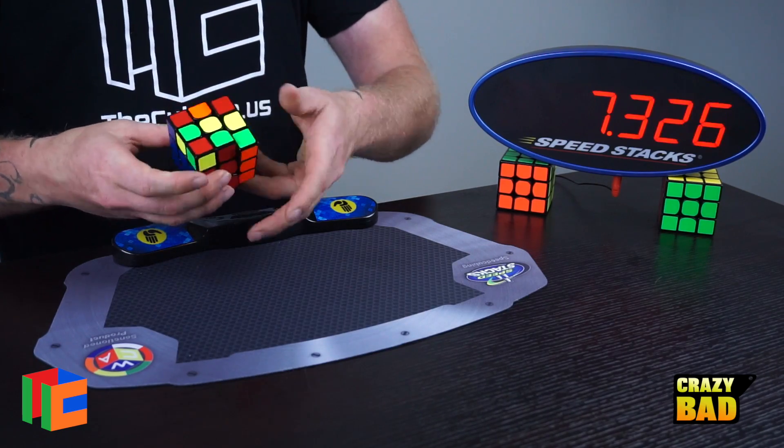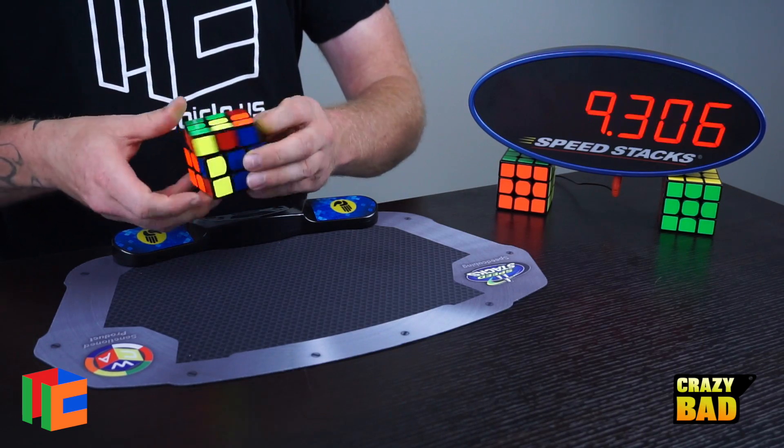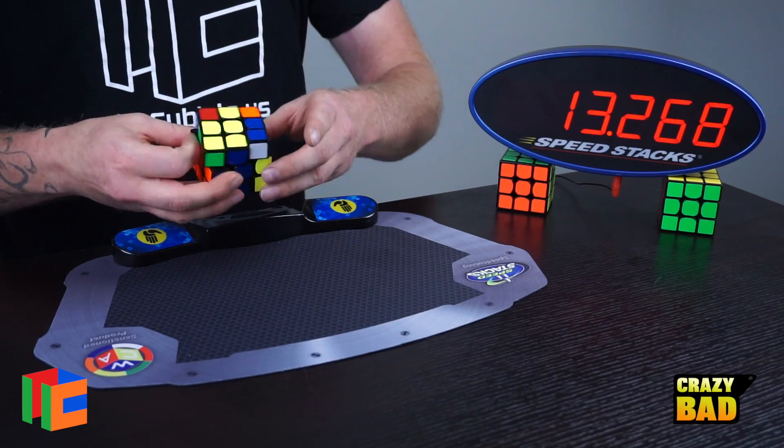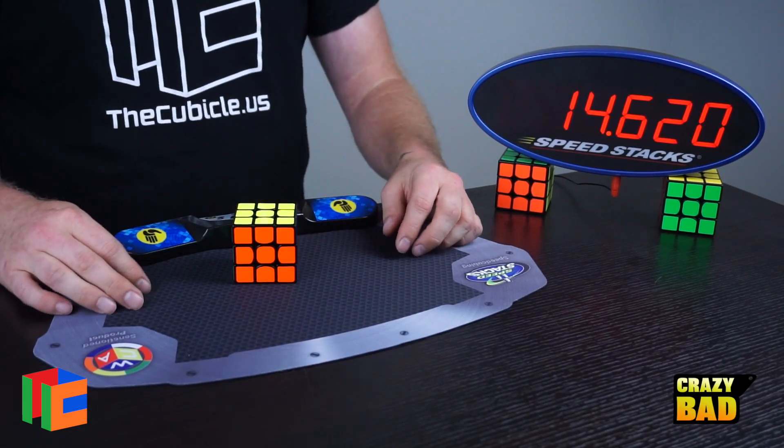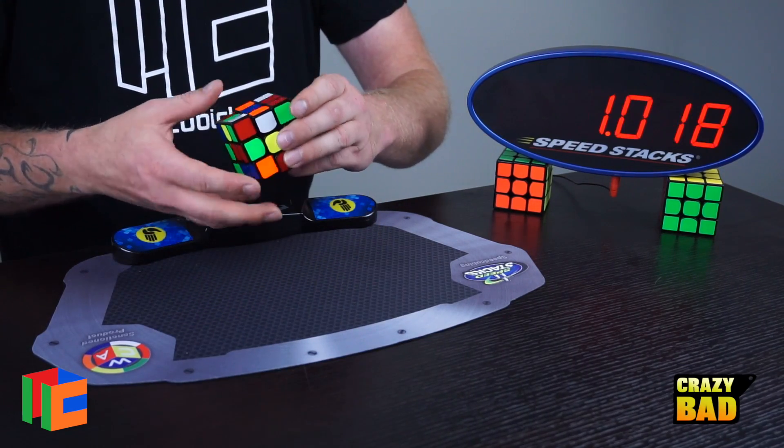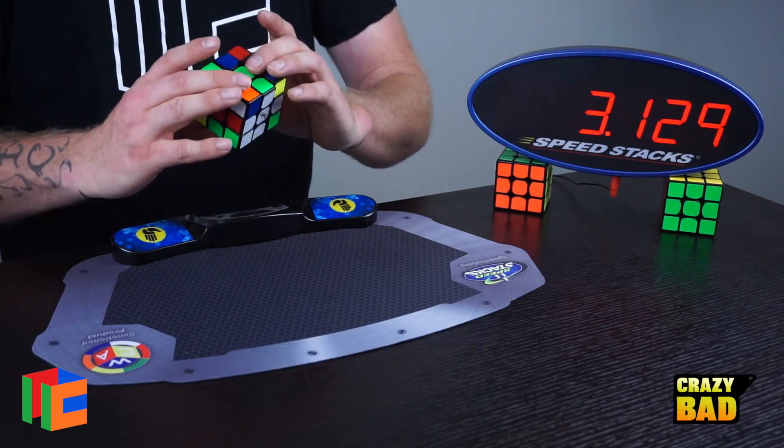And Kevin Hayes did a bit of a review on this as well. And he said in his opinion, this is the best 3x3 ever made. And I think he averages, I think somewhere around 7 or 8 seconds, or maybe 9. I'm not 100% sure what Kevin Hayes averages. But he is fast. He's a world class speedcuber.